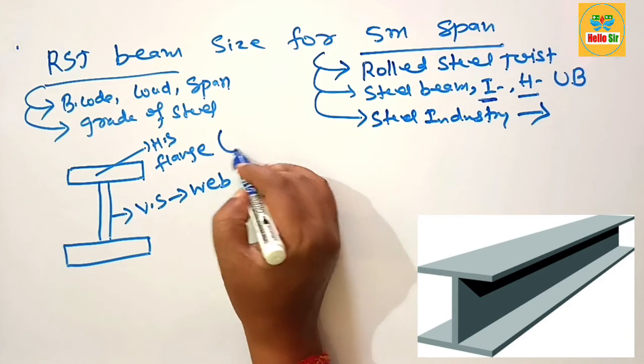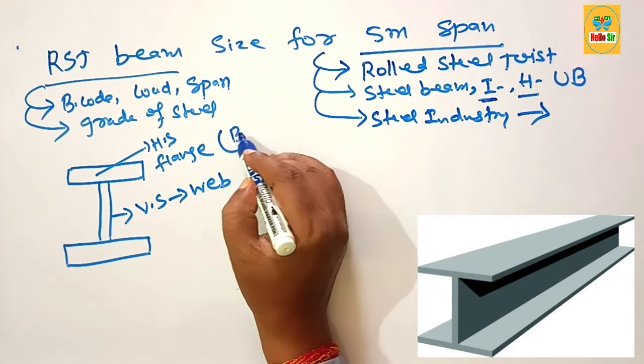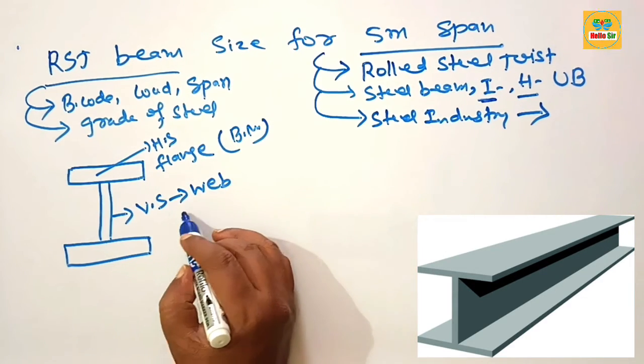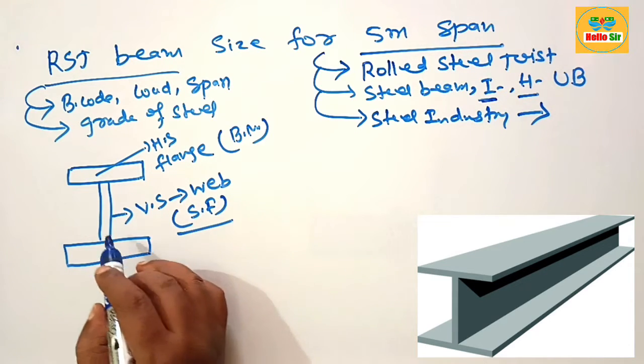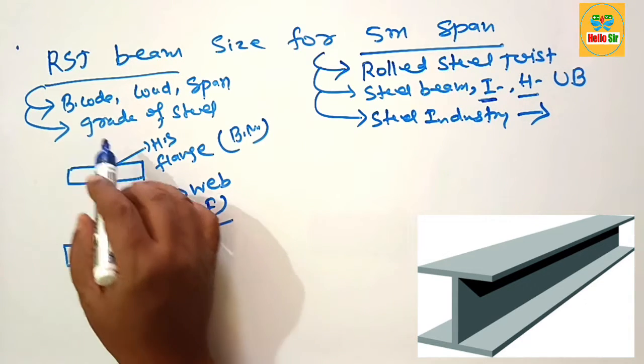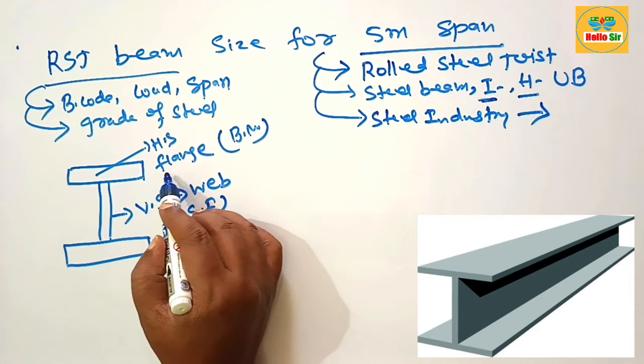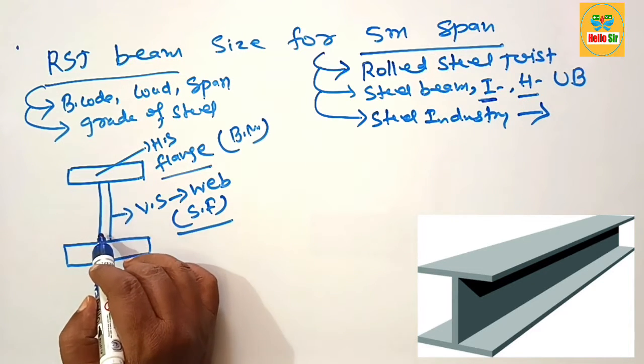What are the function of flange? Flange generally resist bending moment coming on it and web resist generally shear forces. These are the main dimension of the RSJ beam. This one is horizontal section known as flange and this vertical height section known as web.